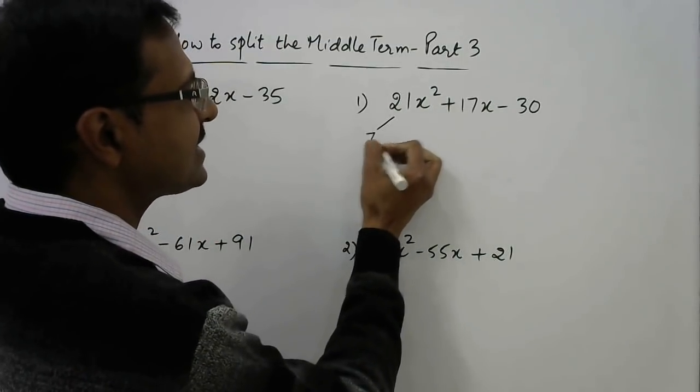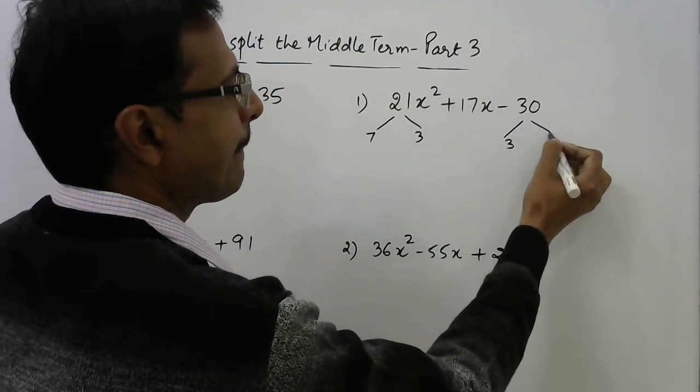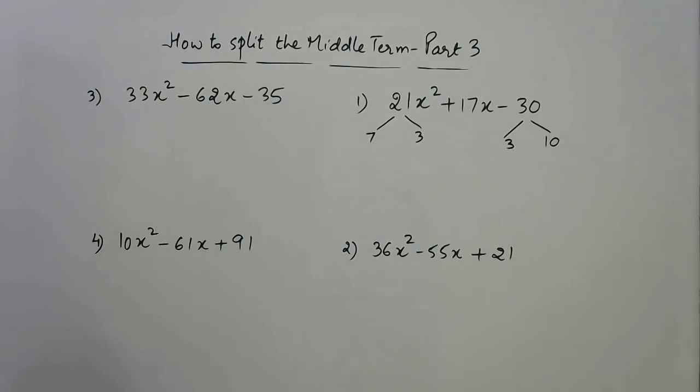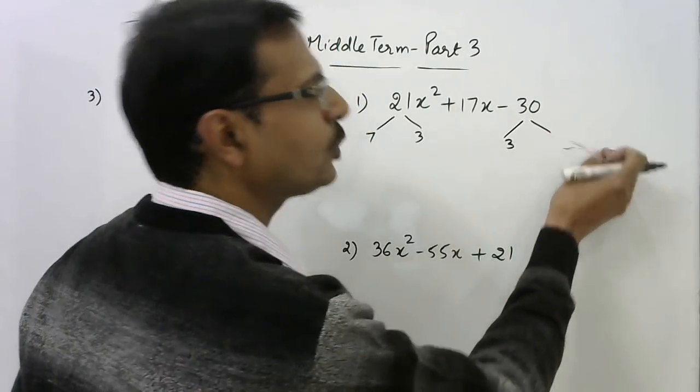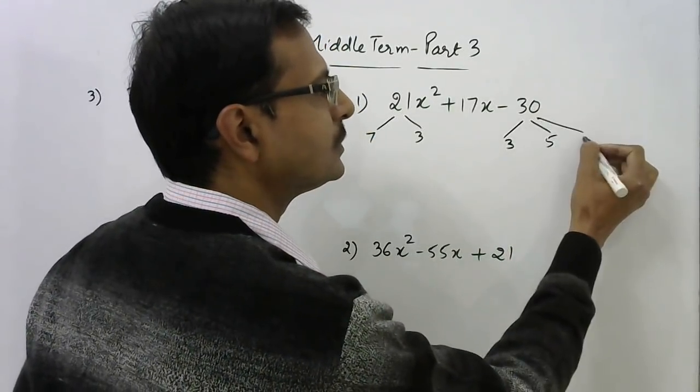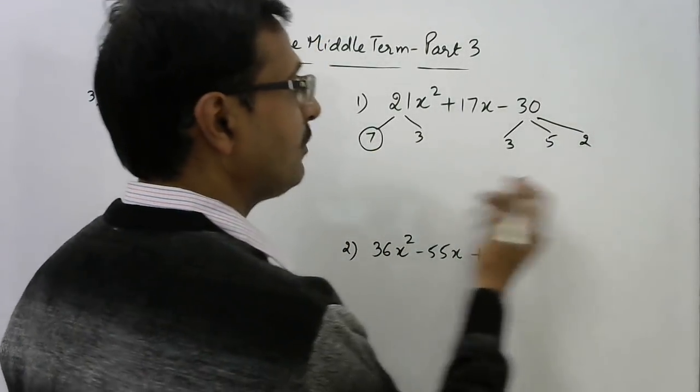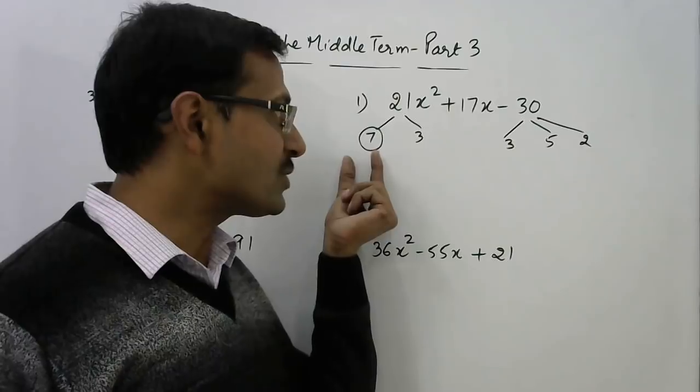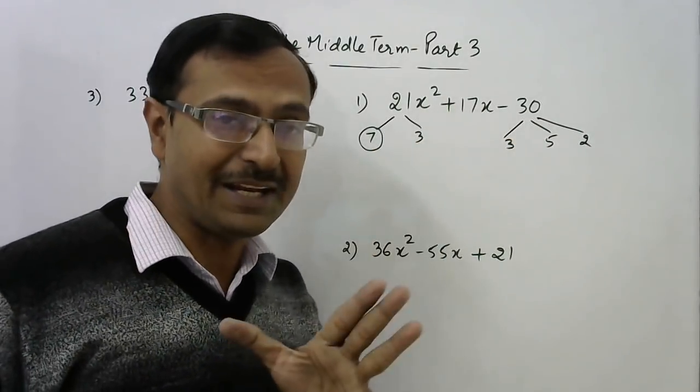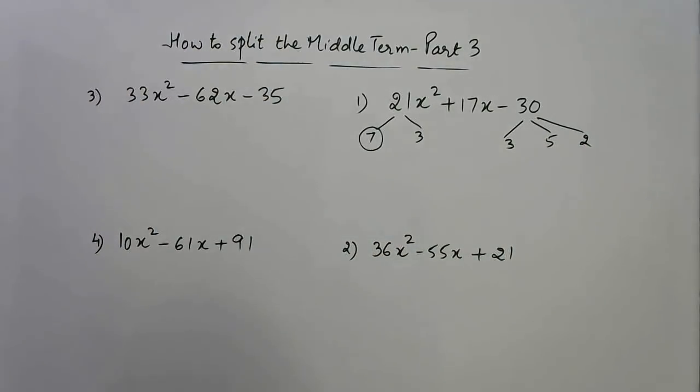See 21 can be factorized as 7 and 3 and 30 is obviously 3 into 10. Now whenever we have such a situation, we need to see this is in prime form like this. Now see the largest number here is 7. So 7 can be 1 term and 3, 3, 5, 2. This is going to be a very large number. The sum and difference of 7 and this big number will not give you 17. So I will not combine 7 with 3, 3, 5, 2.